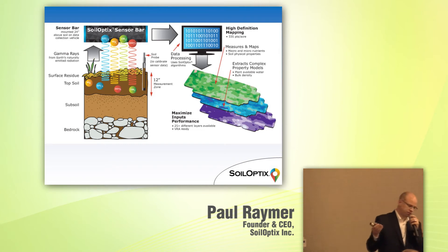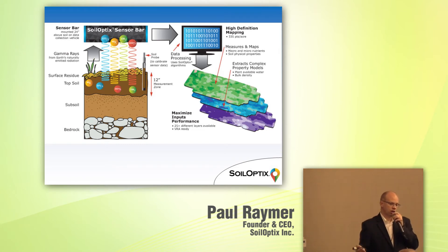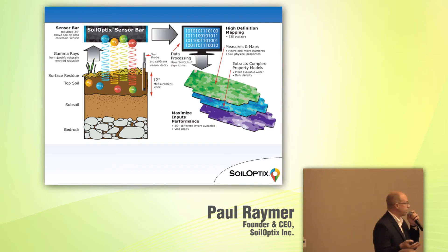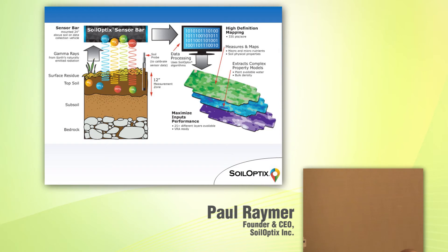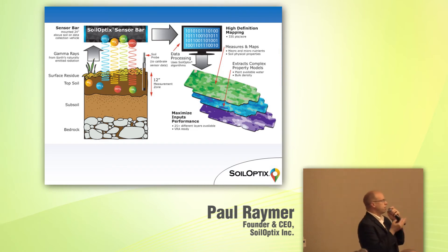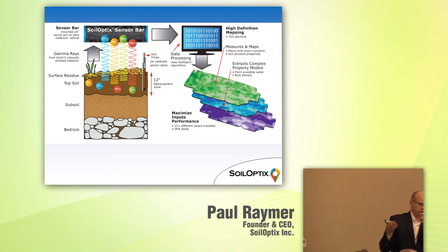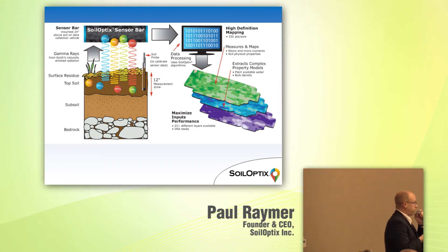So how does it work? Believe it or not, soil gives off natural radiation — it's always in a form of decay. The radiation is called gamma radiation, and it's coming off the soil just like popcorn. We can't sense it as human beings, but this sensor is designed to respond to that radiation activity.